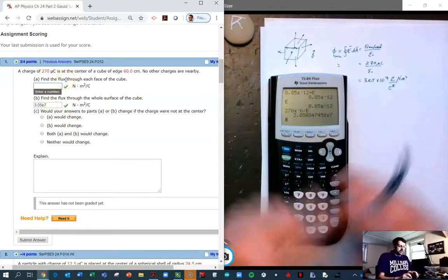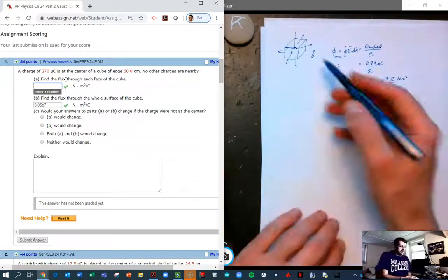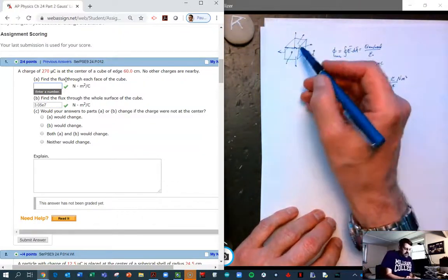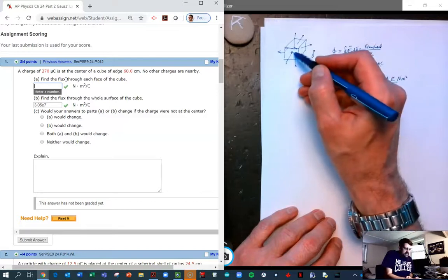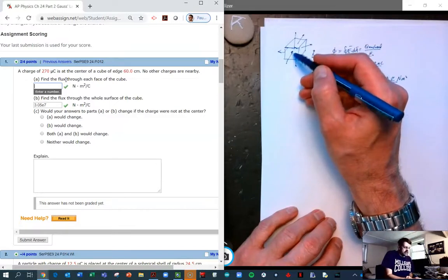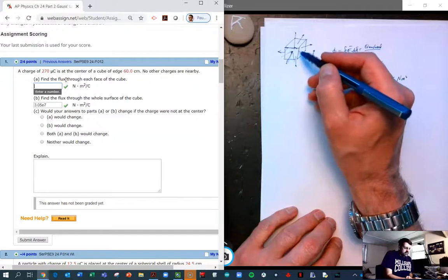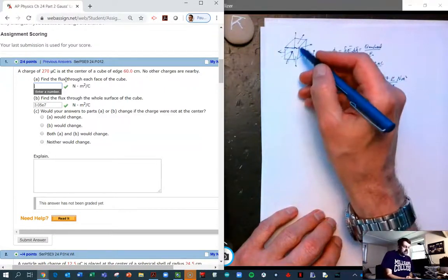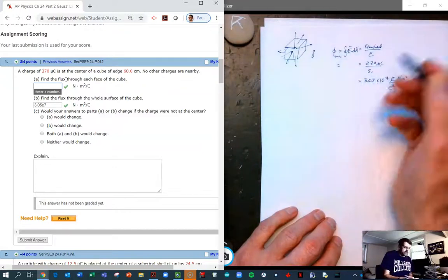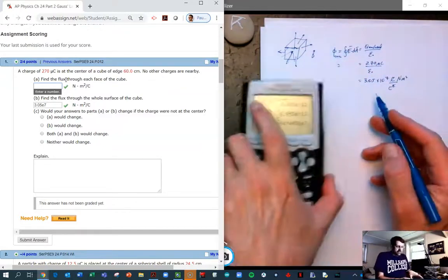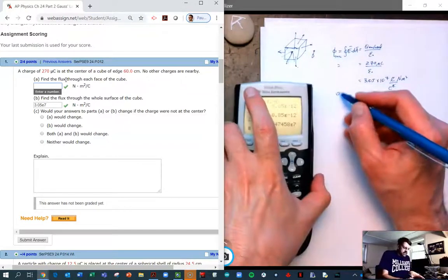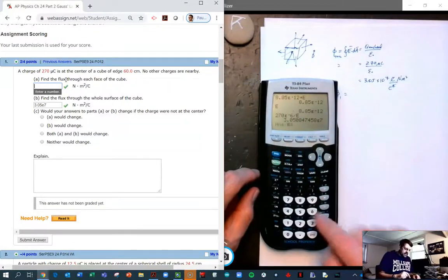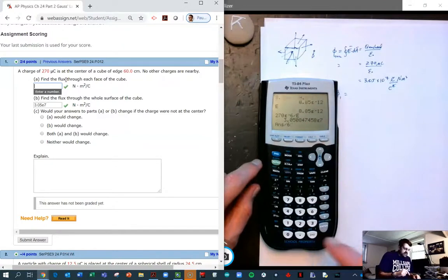And then if we want to find the flux through each of the sides of the cube, that's because the charge is in the middle of the cube, exactly in the middle, then the electric field going through each area is going to be the same because the electric field will be the same distance from all sides of the cube. And so if we simply take that number divided by 6, so the flux through one of the sides is going to be the number we just got divided by the total number of sides.